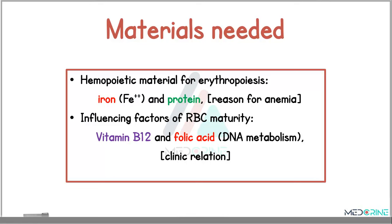What are the materials needed in the formation of red blood cells? We require hemopoietic materials for erythropoiesis, for example iron and protein, and whenever they are reduced, a patient usually presents with anemia. We also require influencing factors of red blood cell maturity, for example vitamin B12 and folic acid.